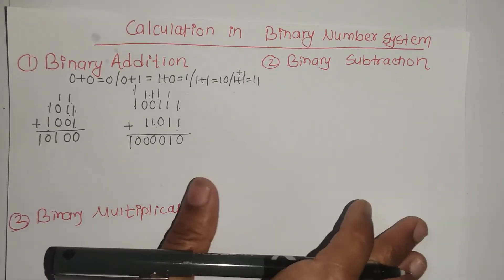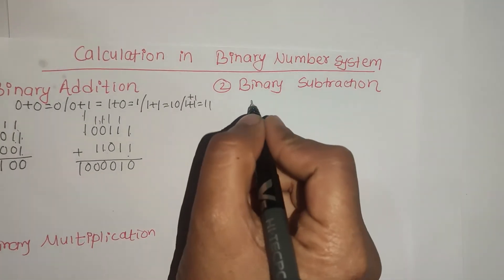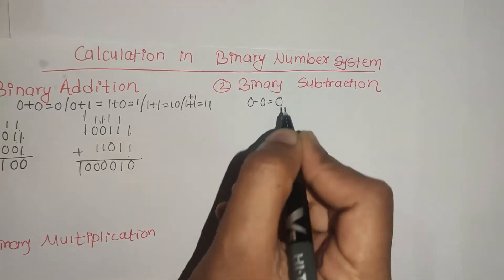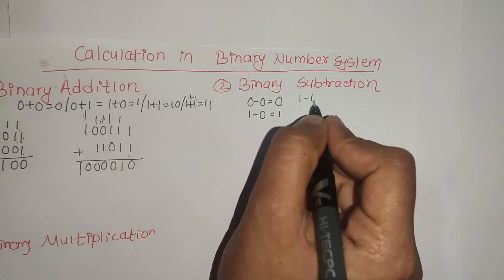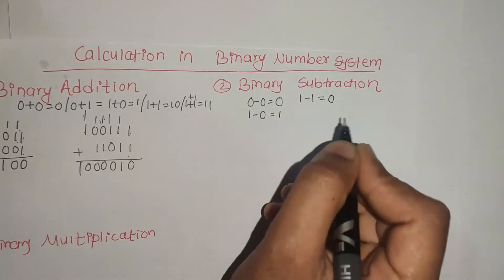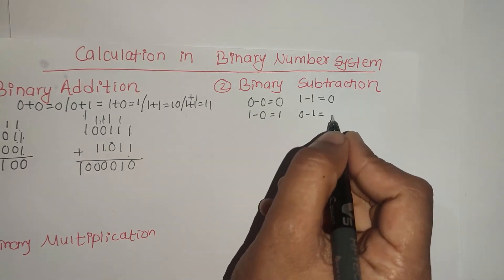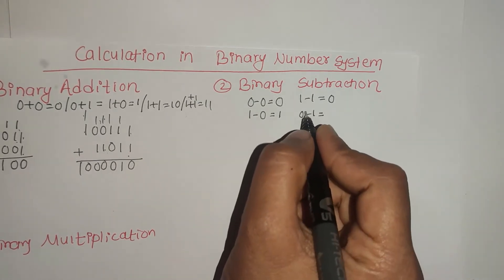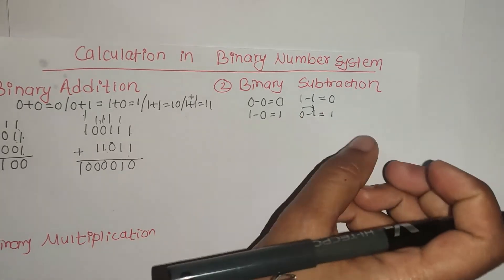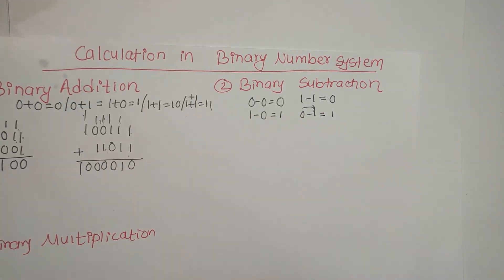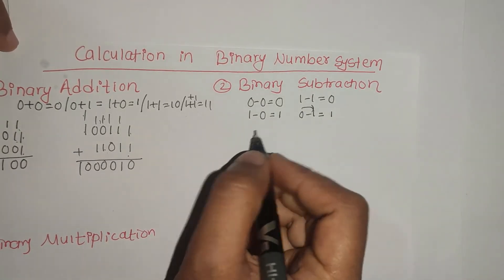Then binary subtraction. The rules are: 0 minus 0 is 0, 1 minus 0 is 1, 1 minus 1 is 0. For 0 minus 1, we need to borrow from the next position.